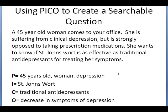We've already done the PICO for this question, so we know that for P, we have a 45-year-old woman and depression. For our I, we have St. John's wort. Our C is traditional antidepressants, and our O is decrease in symptoms of depression.